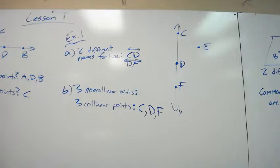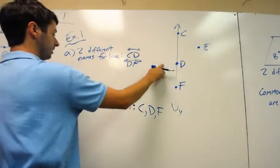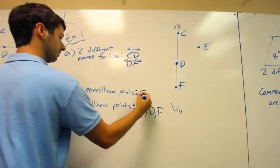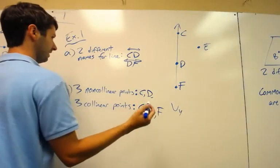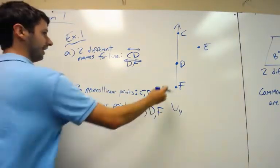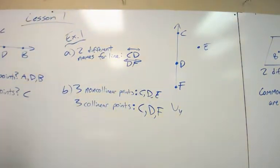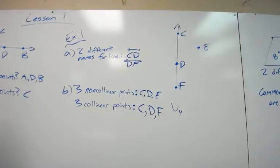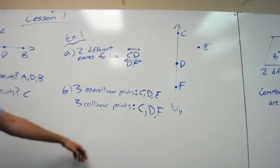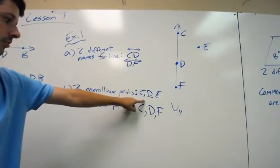Now three non-collinear points. You would use any of the two points here. I'm going to go ahead and use C, D, and then the main thing that you would have to have is making sure that you add E in there to create non-collinear points. So C, D, and E would be examples of non-collinear points.